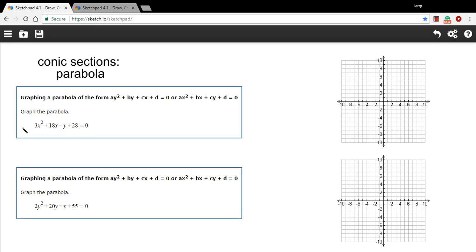You're probably most familiar with an upward or downward opening parabola because it has this x² term. Here we have the equation 3x² + 18x - y + 28 = 0. The first thing you want to do, if you see x², is solve for y. So in this case, you just add y to each side and you get y = 3x² + 18x + 28.